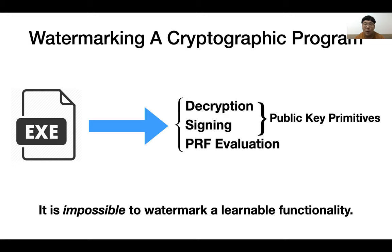That is, the attacker can learn multiple watermarked circuits which are generated by embedding different messages into the same program. One may hope to have secure watermarking schemes for arbitrary programs. However, as shown by Kohai et al. in 2016, no watermarking scheme exists for learnable functionalities. So in the study of watermarking schemes, we usually focus on watermarking schemes for cryptographic programs, such as the decryption algorithm of an encryption scheme, the signing algorithm of a signature scheme, and the evaluation algorithm of a pseudorandom function.